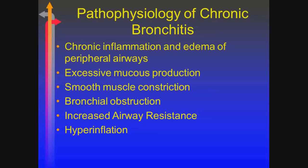Just a review of the pathophysiology of chronic bronchitis: it's primarily an inflammatory response to chronic smoke, tobacco, pollution, occupational exposure — some kind of inflammation. That leads to mucus production and smooth muscle constriction around those airways. Remember, it's the non-cartilaginous ones that promote collapse and obstruction. You end up with hyperinflation to trap gas and obviously an increase in airway resistance, as it is an obstructive defect.